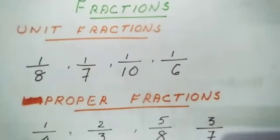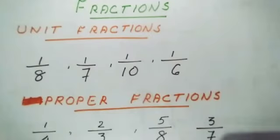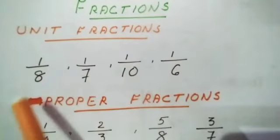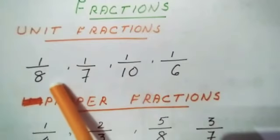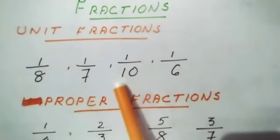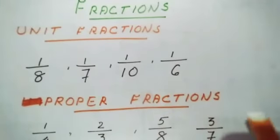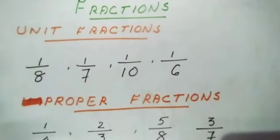The first fraction type is the unit fraction. In a unit fraction, the numerator is always 1. Examples include 1/8, 1/7, 1/10, 1/6, and so on. These are all unit fractions — the numerator is always 1.